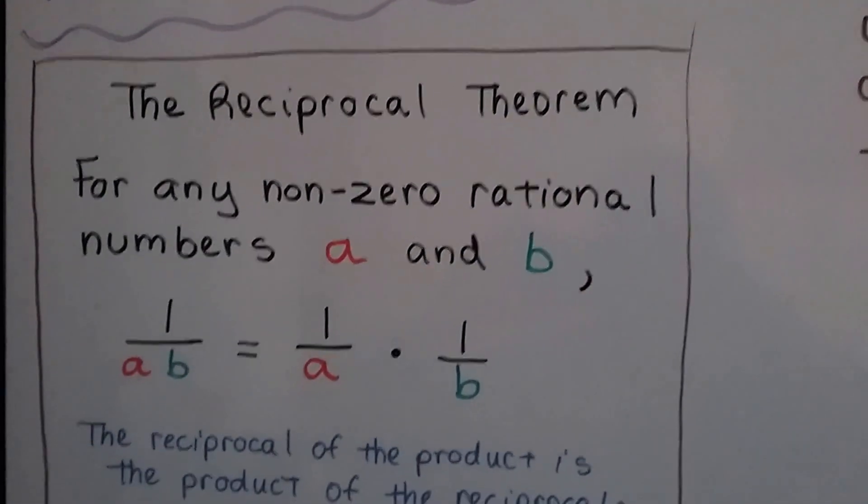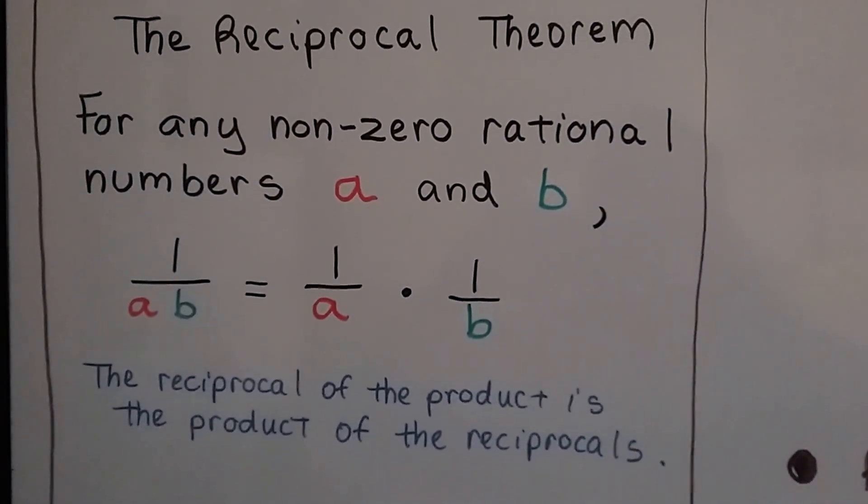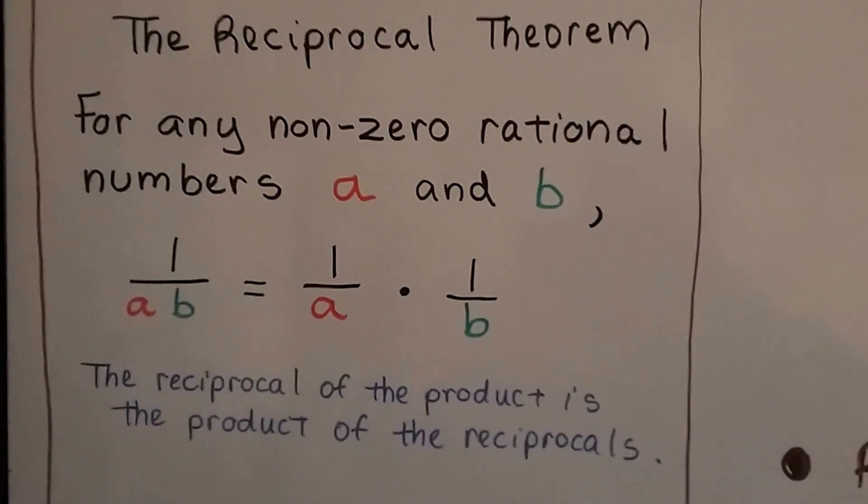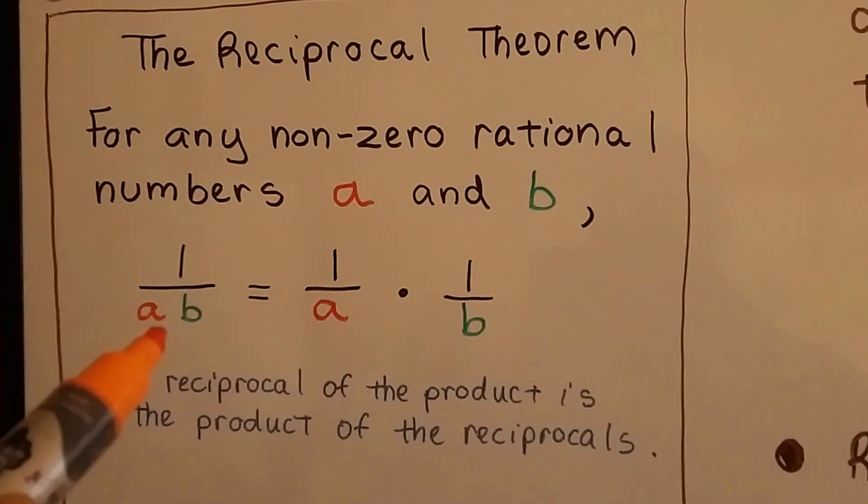The Reciprocal Theorem says for any non-zero rational numbers a and b—because they're the denominator, they can't be zero, can they? So any non-zero rational numbers a and b...